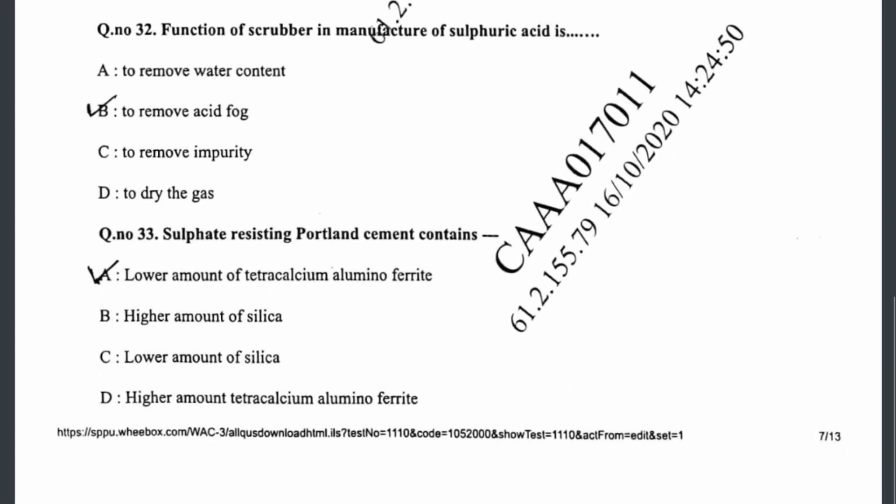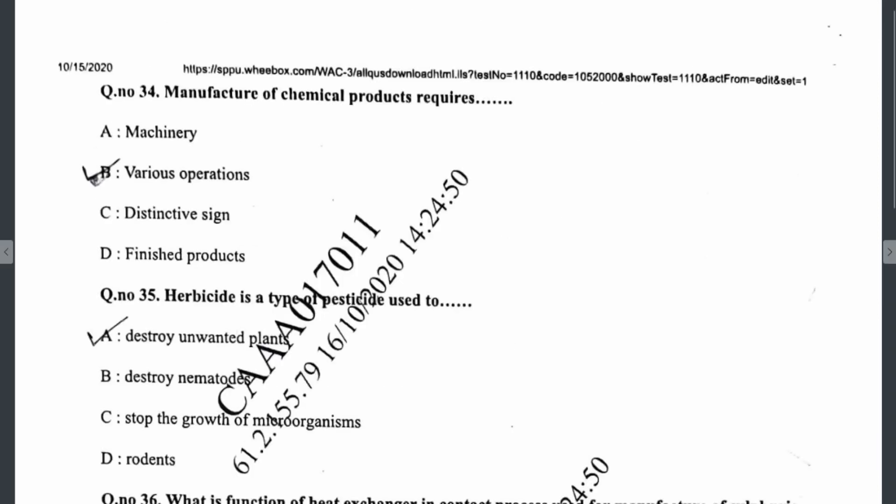Question thirty-three: sulphate-resisting Portland cement contains a lower amount of tetra-calcium aluminum ferrite, which is an aluminum salt. Question thirty-four: the manufacture of chemical products requires various operations. Question thirty-five: a herbicide is a type of pesticide used to destroy unwanted plants.